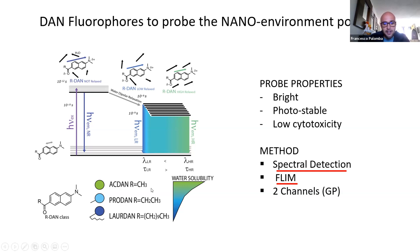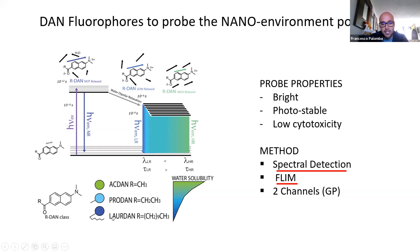Their structures differ in one moiety. Acdan is the more water-soluble, and laurdan has a very long aliphatic chain, so it is almost insoluble in water.